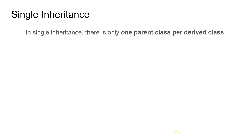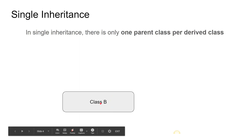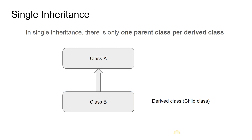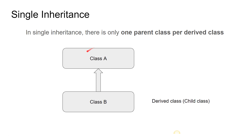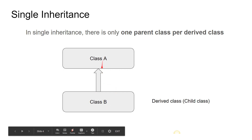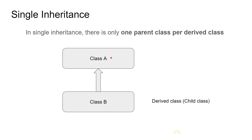In single inheritance, there is only one parent class per derived class. Here we have class B, which is the derived class, child class, or subclass, which is derived from class A. For example, if a mother has blue eyes and the child also has blue eyes, it is said that the child inherits properties of the mother. Class B can access variables and methods of class A using inheritance.